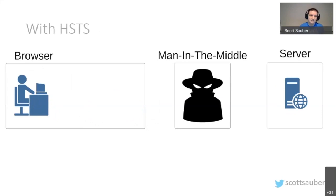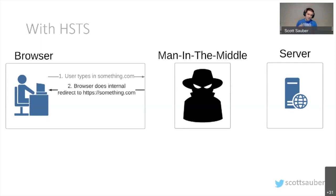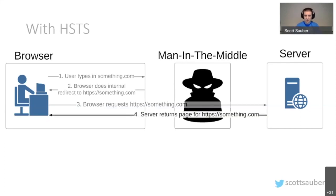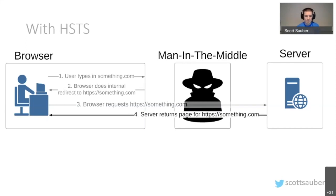With HSTS, when the user types something.com, the first request goes over HTTP but never actually leaves the browser. The browser does a 307 internal redirect to HTTPS, and at that point the browser negotiates with the server and bypasses the man-in-the-middle attack. So even if you're on a compromised network, you can bypass the attack and serve everything securely.